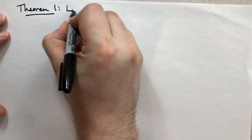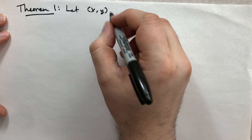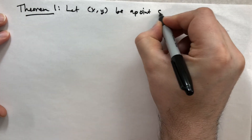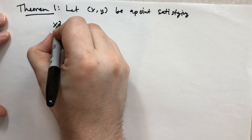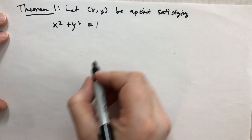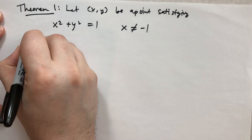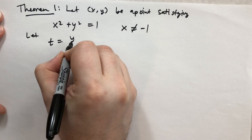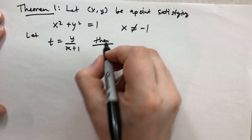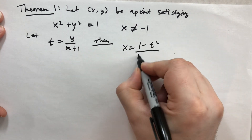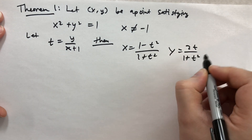We haven't proved this covers all rational points, so let's do a theorem. Theorem: let (X, Y) be a point satisfying X² + Y² = 1, such that X ≠ −1. Let T = Y / (X + 1). Then X = (1 − T²) / (1 + T²) and Y = 2T / (1 + T²).